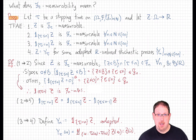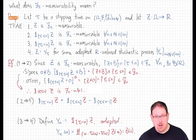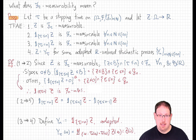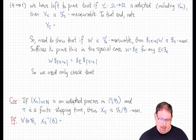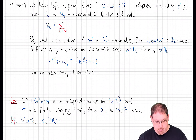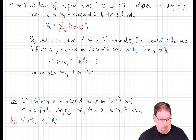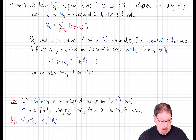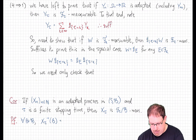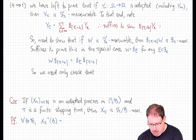So that shows the converse of what we started out wanting to show: if z is F_tau measurable, then it is a stopped process. We now want to see the converse to complete this equivalence — that any stopped process is in fact F_tau measurable. To see that, we start by noting that if I have an adapted process y_n and I stop it at time tau, since it's real valued I can write that as a sum over all k less than or equal to infinity of the indicator of the event tau equals k times y_k. To show that this is F_tau measurable, since it's a sum it suffices to show that each of the terms is F_tau measurable.